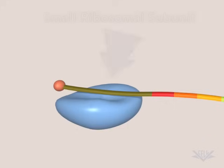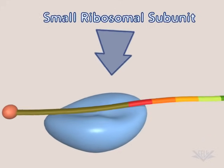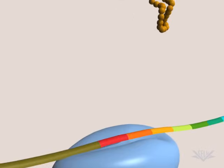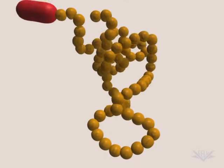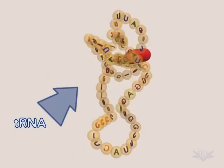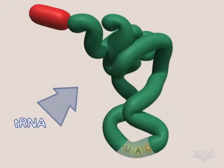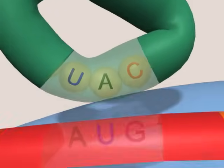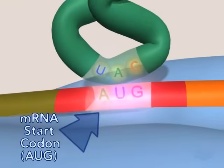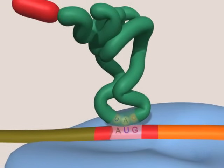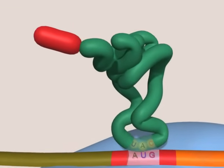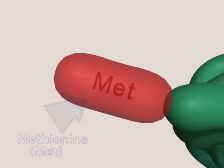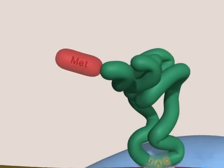Translation initiation begins when the small subunit of the ribosome attaches to the cap and moves to the translation initiation site. tRNA is another key molecule. It contains an anticodon that is complementary to the mRNA codon to which it binds. The first mRNA codon is typically AUG. Attached to the end of the tRNA is the corresponding amino acid — methionine corresponds to the AUG codon.